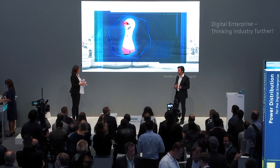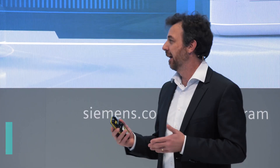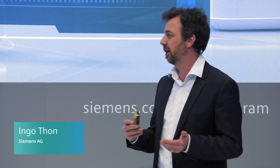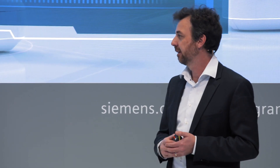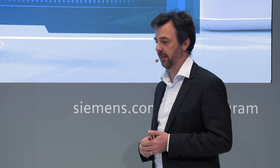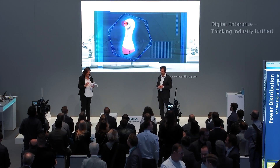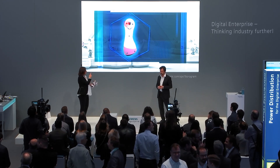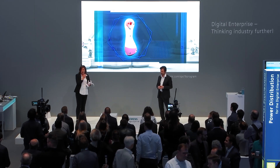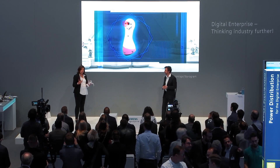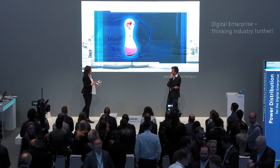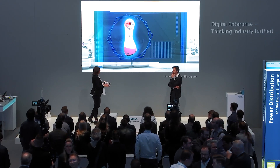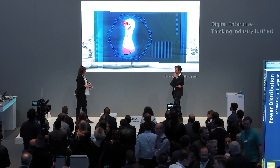A typical rule of thumb we use to answer whether AI can solve this problem is: would a human spot the same issue on a camera image? With this cat, it's pretty easy to find the defect. In every leg we have some screws, and sometimes the screws are missing. With the human eye you can detect this — you can spot the defect.